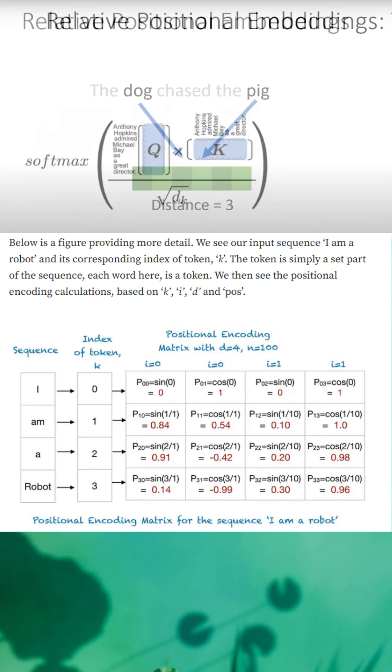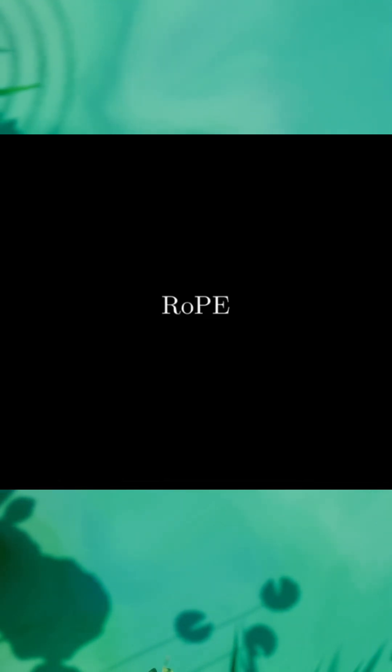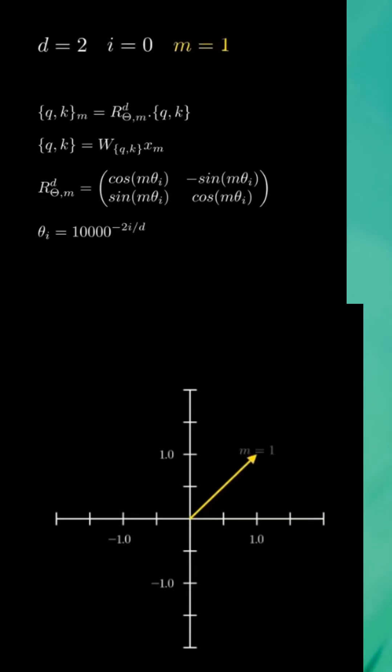This requires you to modify the attention mechanism to add in relative positional embeddings. Now, let's introduce Rope, Rotary Positional Embeddings. Its primary functionality is rotating query and key vectors based on position in the sequence.